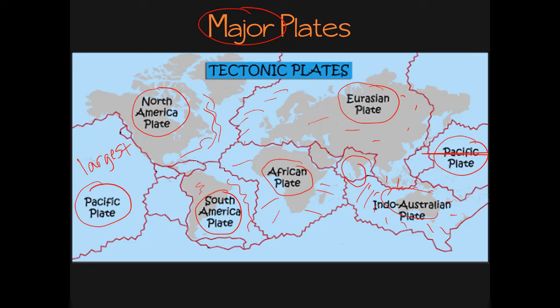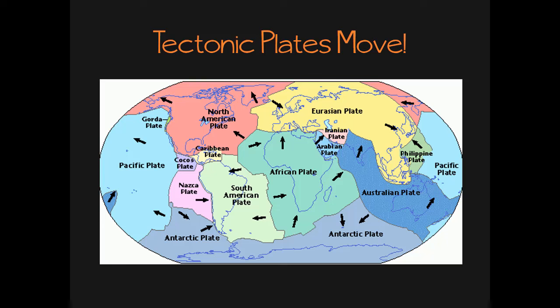So as long as you know your major world geography, it's easy to remember the names of the major plates. But the thing is, the tectonic plates don't just sit there — they're actually moving around really, really slowly, only a few centimeters per year, or about as fast as your fingernails grow. And this map shows the direction that some of the different plates move, and as you can see they're moving in all different directions.